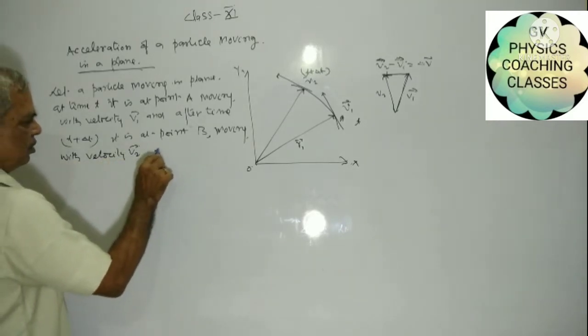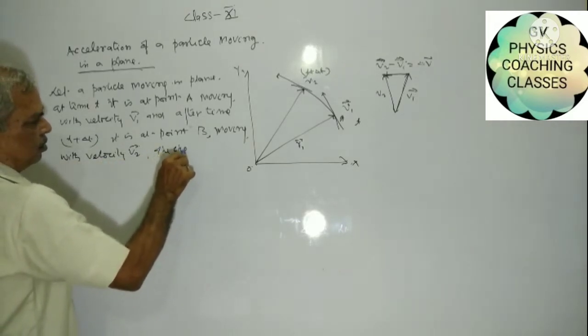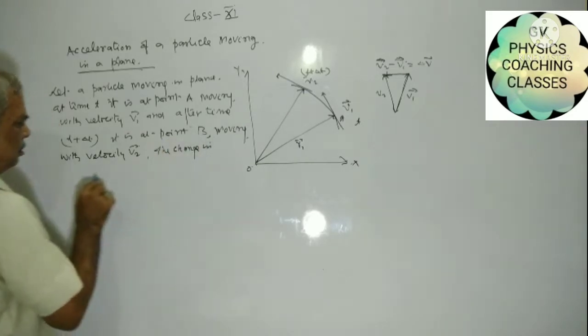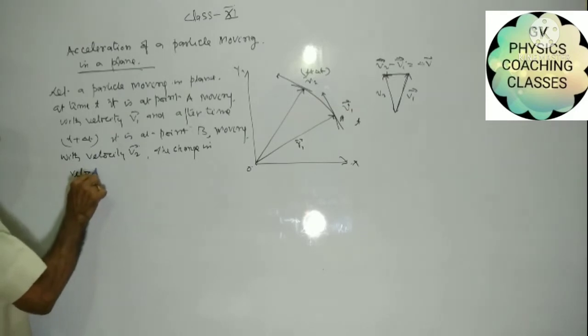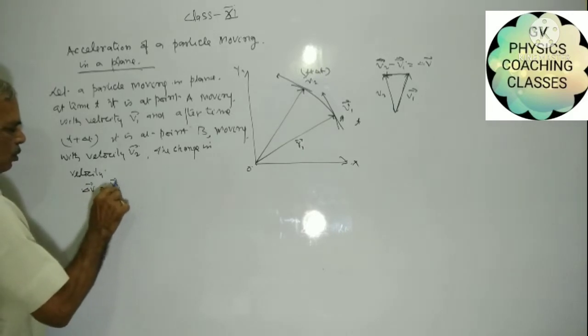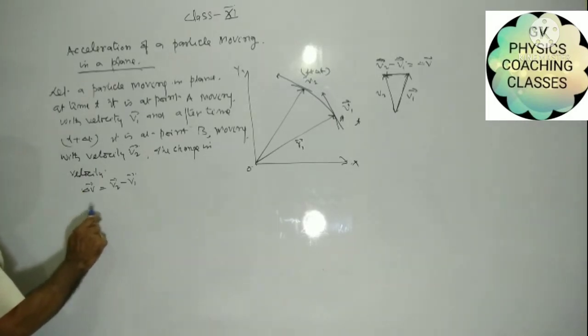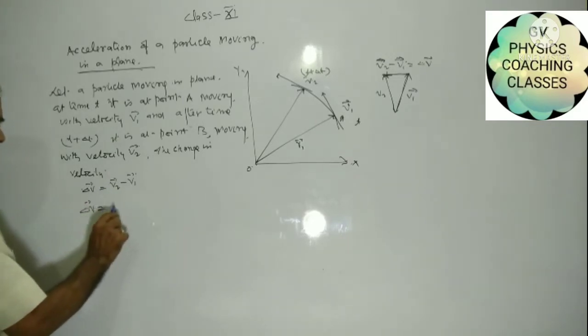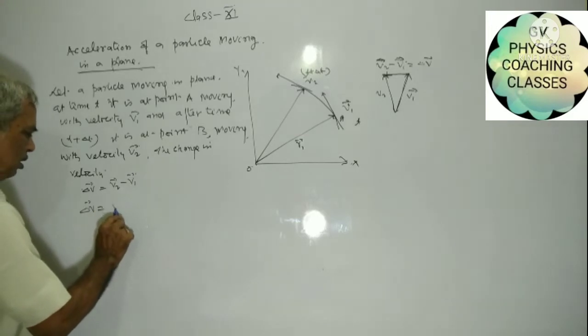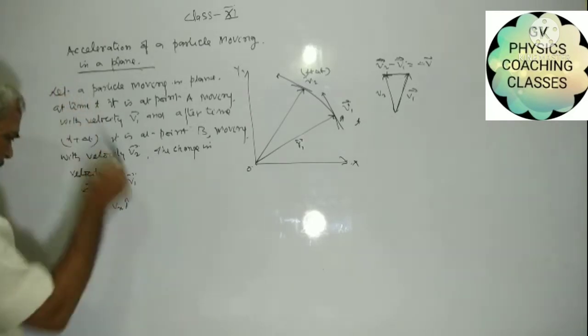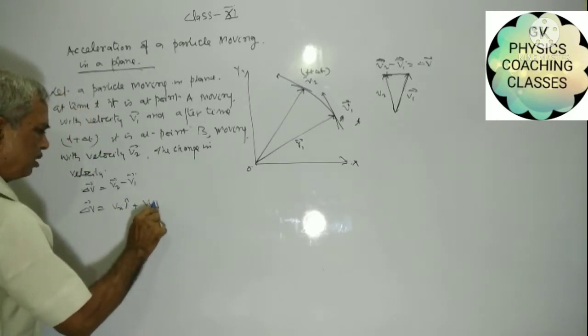The change in velocity: delta V equal to V2 minus V1. Or we can write it as Vx i cap plus Vy j cap.